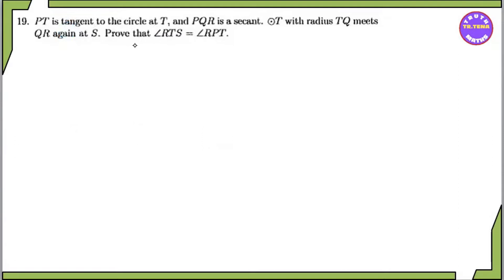Welcome to the textbook for grade 11, chapter 7, 9, and chapter 11, on page 19. BT is a tangent. BT equals the tangent to the circle.